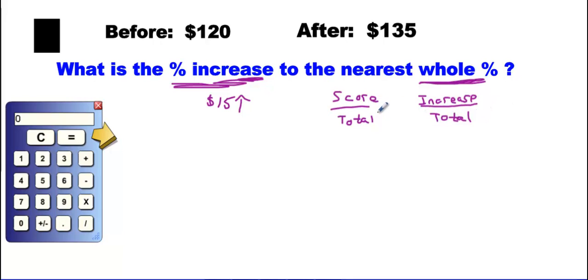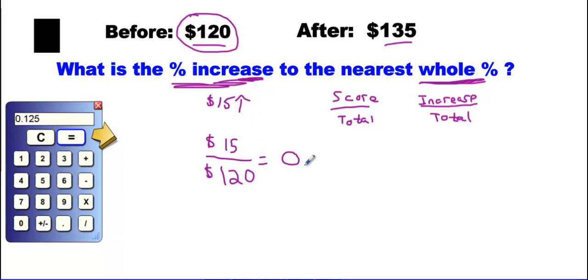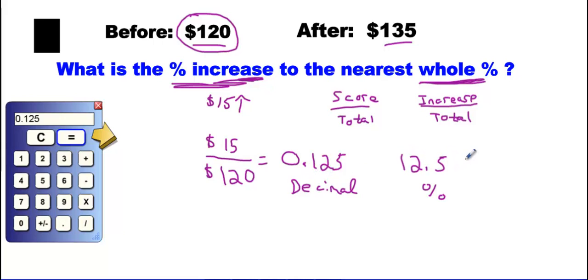We have two totals — the before price and the after price — but you always use the original, before the change happened. So $120 is our denominator and $15 is our numerator. On the calculator: 15 ÷ 120 = 0.125. To convert to a percent, multiply by 100 — move the decimal two places — and you get 12.5%.